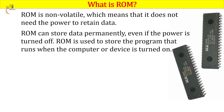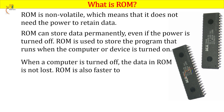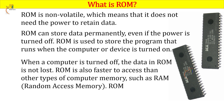There are many programs stored in ROM memory. When a computer is turned off, the data in ROM is not lost. ROM is also faster to access than other types of computer memory, such as RAM. ROM chips are usually located on the motherboard of a computer.